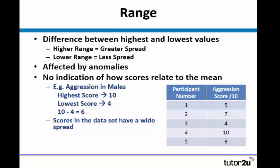If we were going to calculate the aggression in males, we can see here from the data in the table that the highest score is 10 and the lowest score is 4. So to calculate the mean, it would be a simple solution of 10 minus 4, which equals 6. And this would indicate to us that the scores in our data have quite a wide spread.